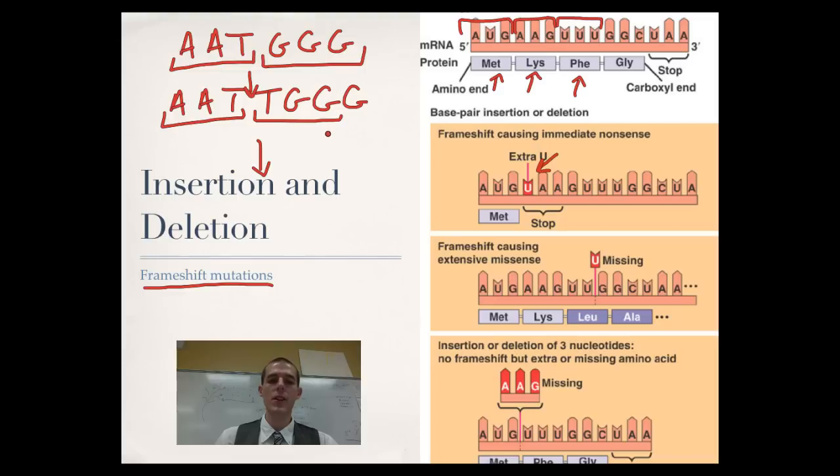Same thing for a deletion. If you were to have the same set of six and then, let's say, knock out this G, first codon's fine, but the next one, it would read this and then whatever letter might be over there. So they're called frame shift mutations because they are shifting the frame that the ribosome is reading. And these are generally very detrimental because one insertion or deletion is going to screw up every codon downstream from it.